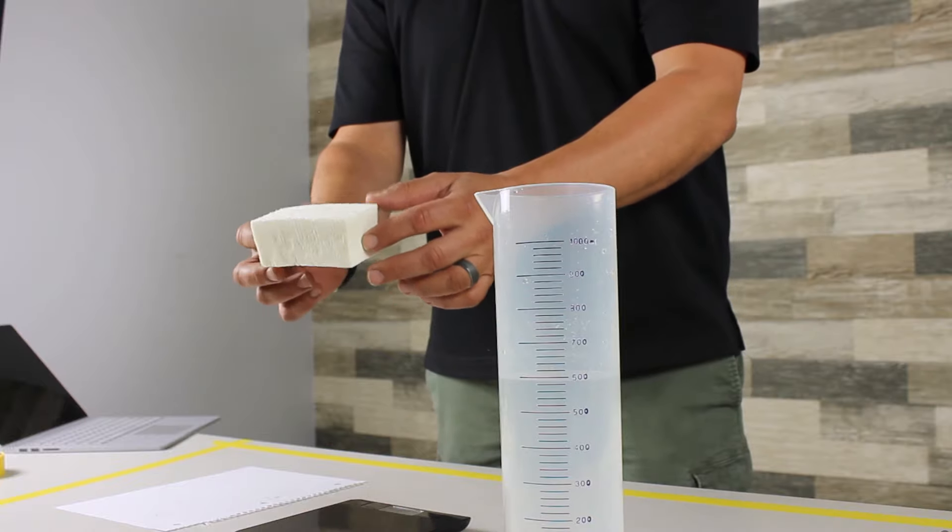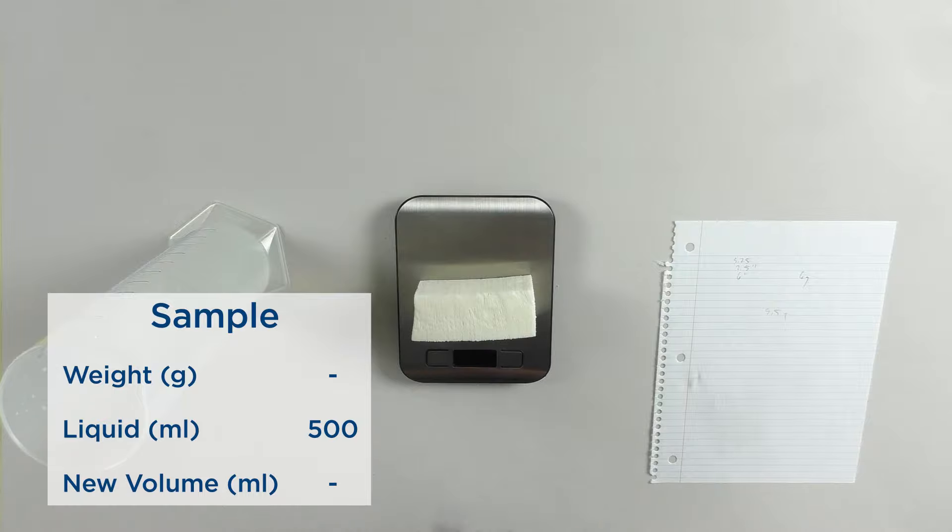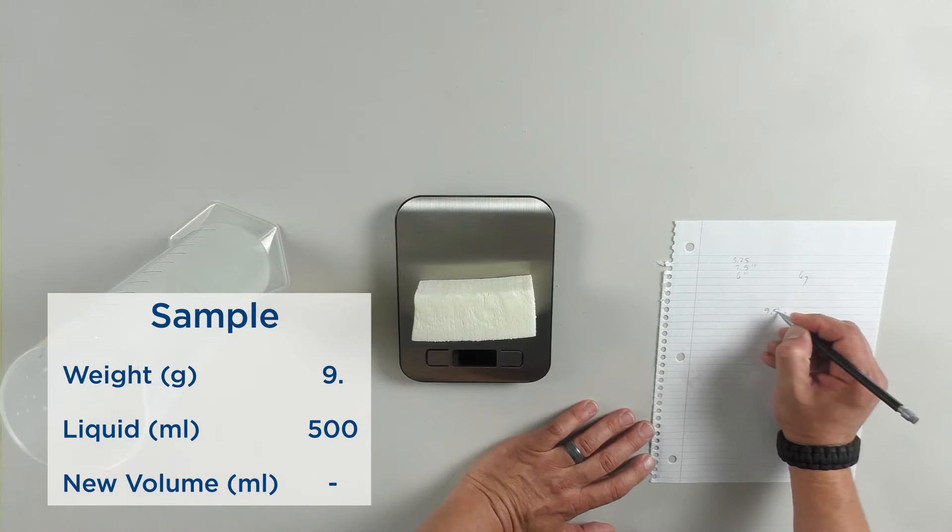Once again, you start with a nice square sample that you can easily fit into your cylinder, and you start by weighing it. This comes out at 9.5 grams.